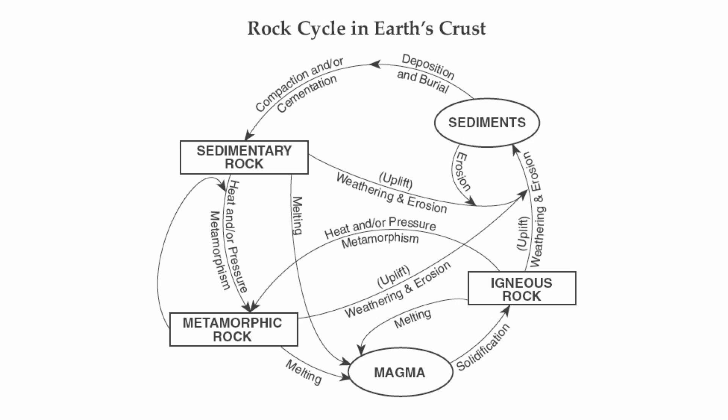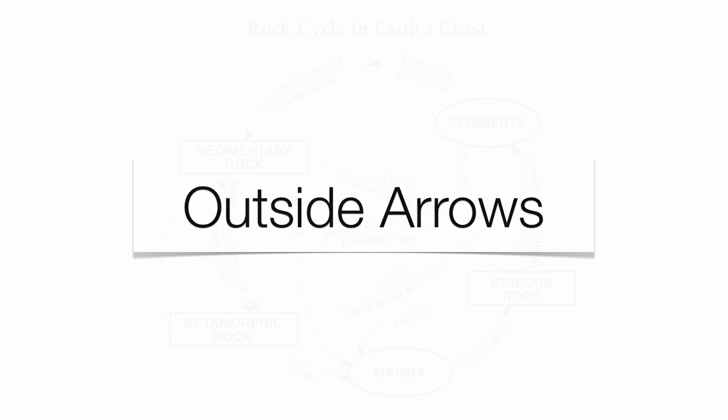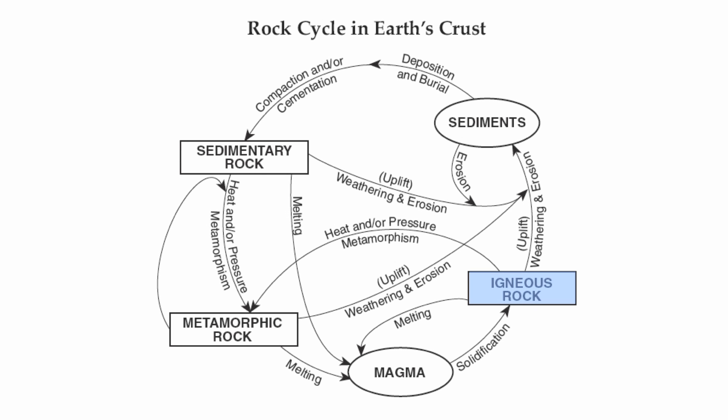Let's start off by looking at the outside arrows of the rock cycle, which tell us the actual processes that make each individual rock type. Starting with igneous: melting a rock into magma or lava, that magma or lava then solidifies and crystallizes into an igneous rock. Notice that the processes always come before the actual rock name.